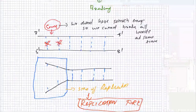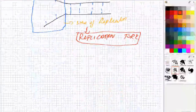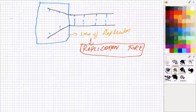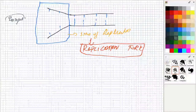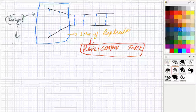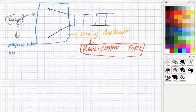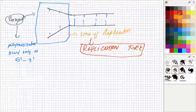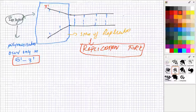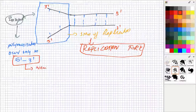The site of replication is known as the replication fork. The enzyme will come and recognize the ORI. An important speciality of the enzyme is that polymerization — new strand synthesis — occurs only in one direction, that is 5' to 3'. Only 5' to 3' is the direction of the new strand. The old template strand direction is 3' to 5', and the new strand will be in the 5' to 3' direction only.